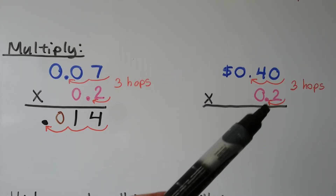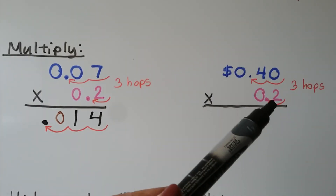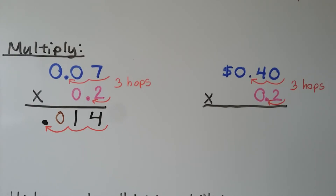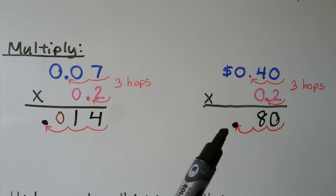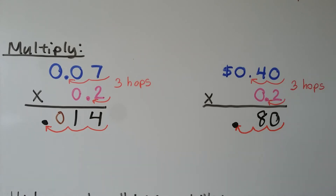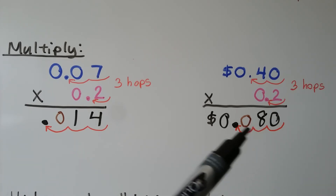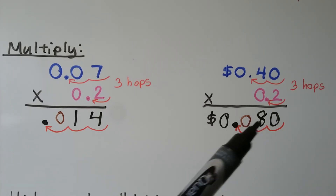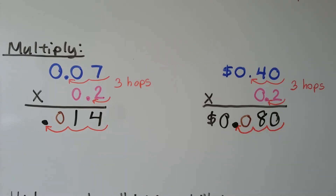For this one, we have 2 times 40, which is 80. According to the factors, there should be 3 decimal place value hops in the product. We would have to insert a 0 in the tenths place as a placeholder. But we're multiplying a money amount, and there should only be 2 place values for the cents — for the parts of a dollar. So we can remove this trailing zero. Our product is 8 cents.